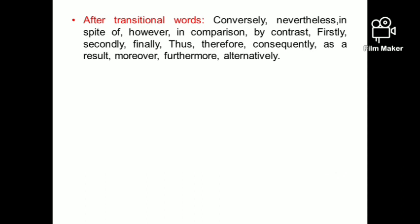Next, and most importantly, we use a comma after transitional words — these are what we call linkers or linking words. These are mostly used in IELTS writing task 2, and some are also used in task 1. Words such as: conversely, nevertheless, in spite of, however, by contrast, firstly, secondly, finally, thus, therefore, consequently, as a result, moreover, furthermore, alternatively, after all — after all these words it is essential to put a comma. If you want to use 'however' in the middle of a sentence to join two clauses, you must put a comma both before and after it.